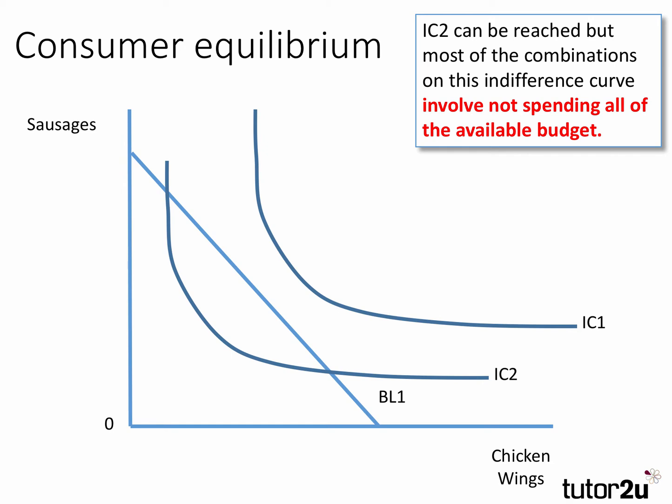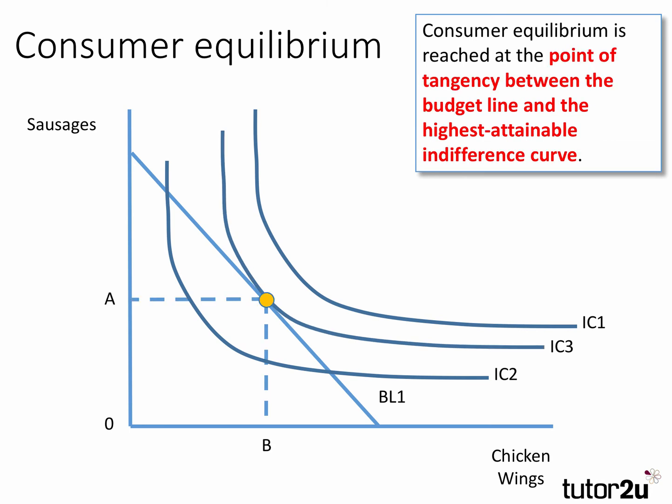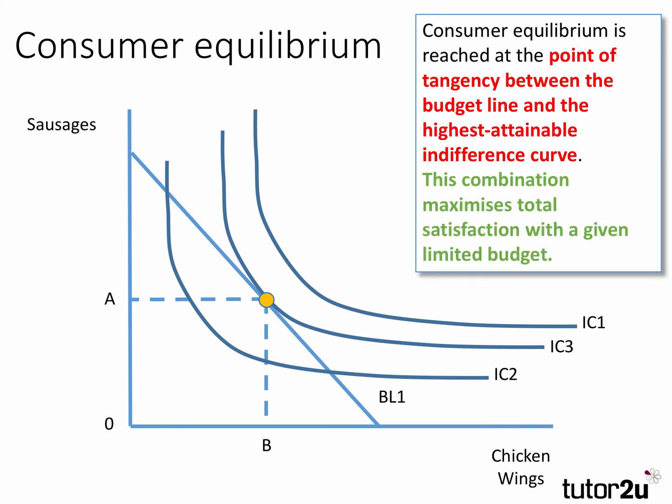So the equilibrium position will be here. Equilibrium in this theory is reached at a point of tangency between the budget line BL1 and the highest attainable indifference curve, which in this case is IC3. That's the highest indifference curve the consumer can reach with the budget line in its current position, allowing them to consume A units of sausages and B units of chicken wings to maximize their satisfaction.